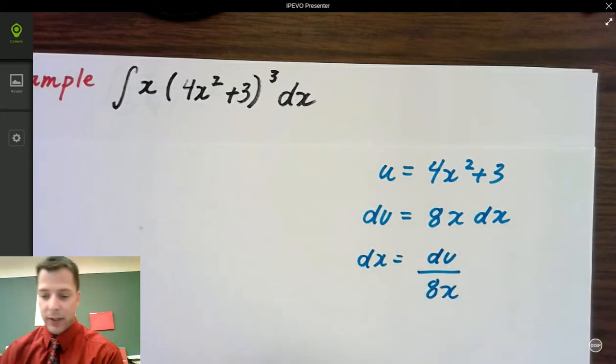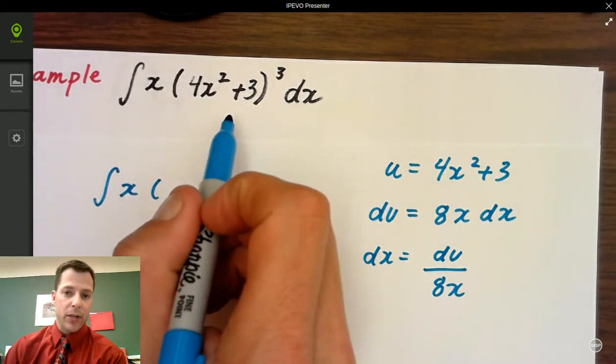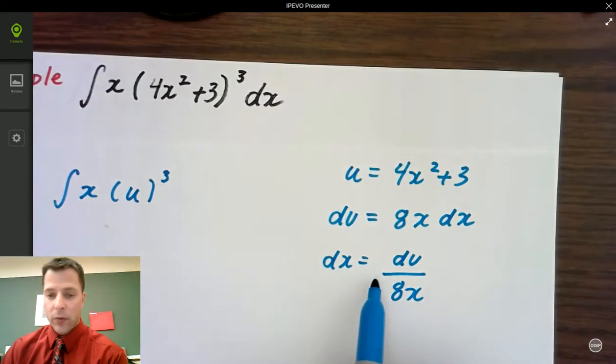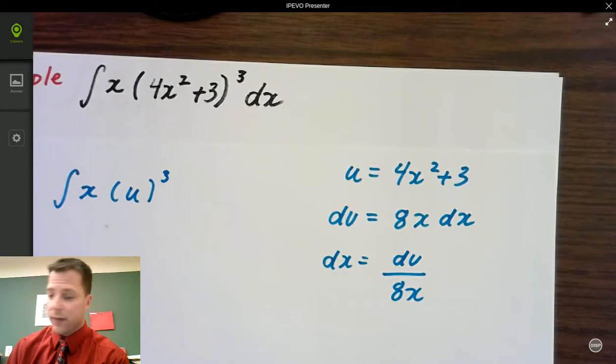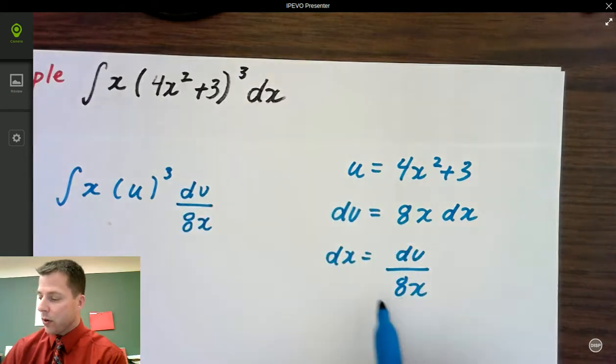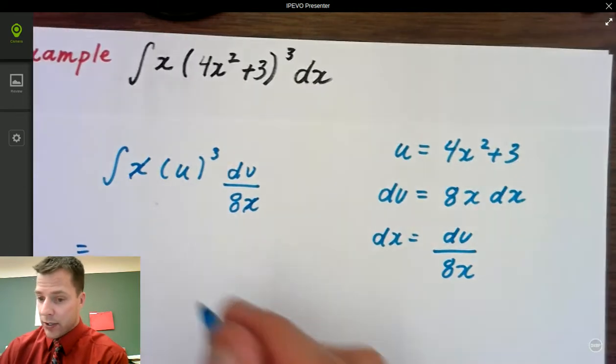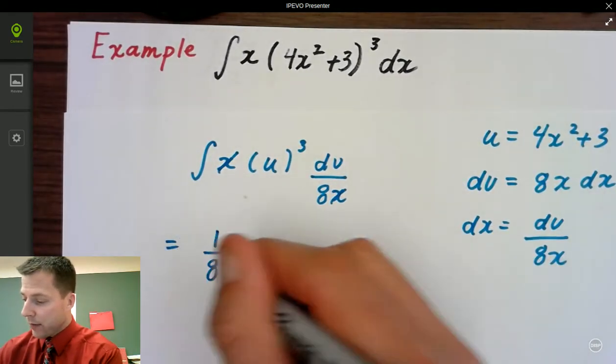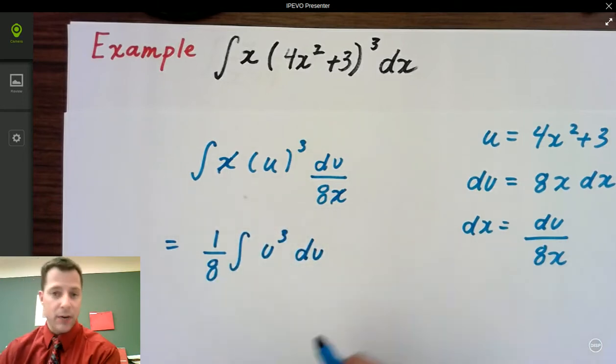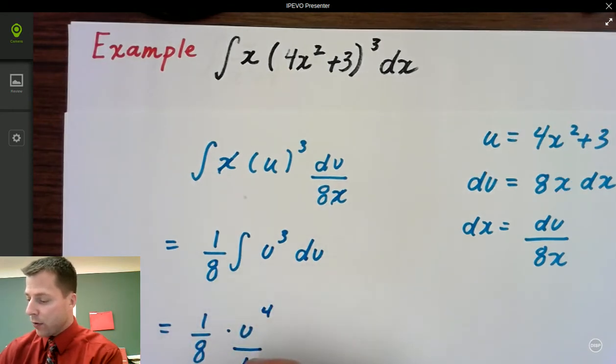Now, this works out perfectly. Watch what happens. Let's rewrite the integrand. I have x times, it's not 4x squared plus 3, it's u. So you have u to the third power. Now, look, x, u, we've got to have an integrand in terms of one variable. So look, we're going to say du over 8x. We're going to substitute what we know for dx, and look what happens. The x's cancel, they become 1, and that's what we need. So now we bring out the 1 eighth from here, and we have the integral of u cubed du. And now it's the power rule. We're going to take 1 eighth times u to the fourth over 4 plus c.